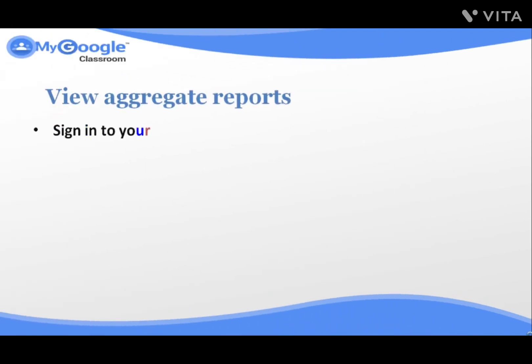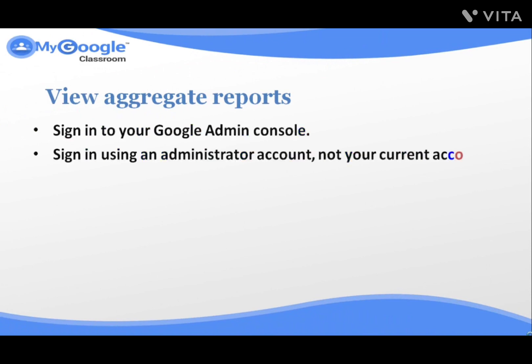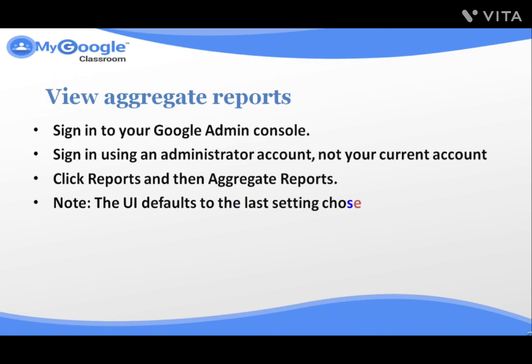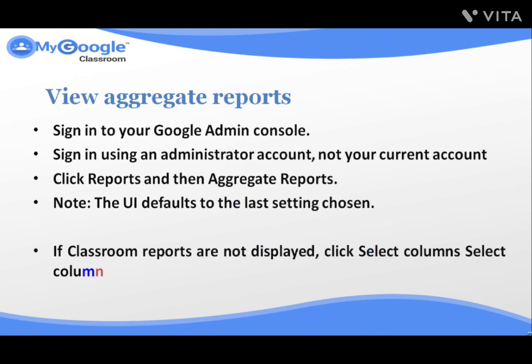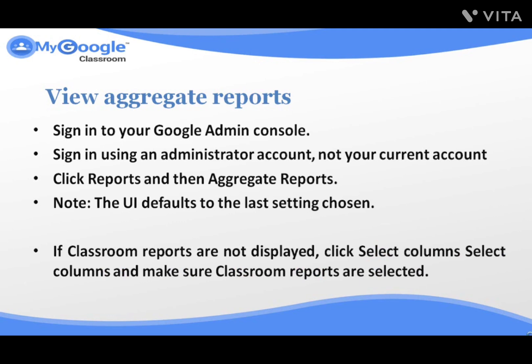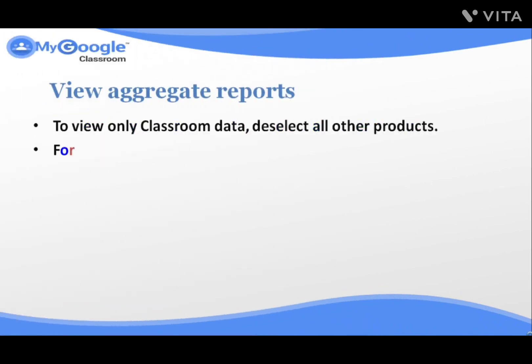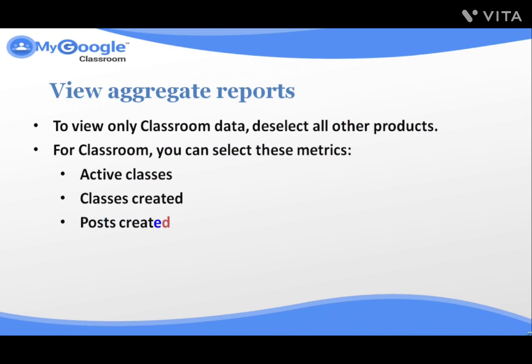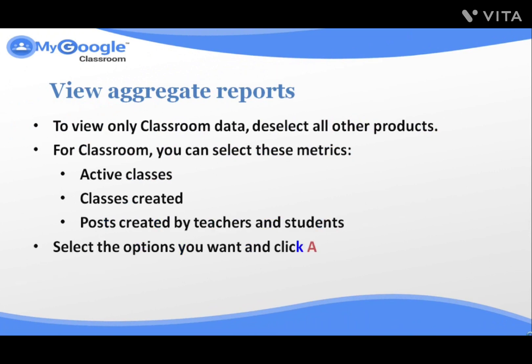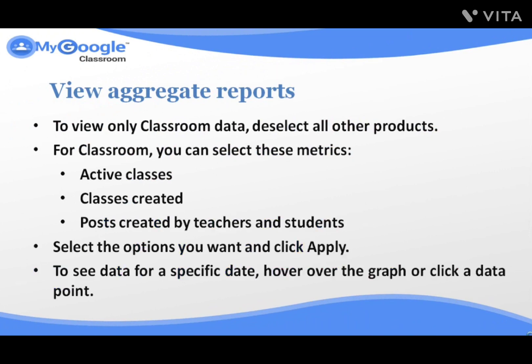View Aggregate Reports. Sign in to your Google Admin Console using an administrator account, not your current account. Click Reports and then Aggregate Reports — note the UI defaults to the last setting chosen. If classroom reports are not displayed, click Select Columns and make sure Classroom reports are selected. To view only classroom data, deselect all other products. For Classroom, you can select these metrics: Active Classes, Classes Created, Posts Created by Teachers and Students. Select the options you want and click Apply. To see data for a specific date, hover over the graph or click a data point.